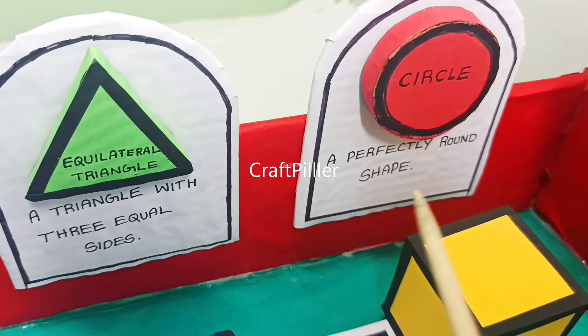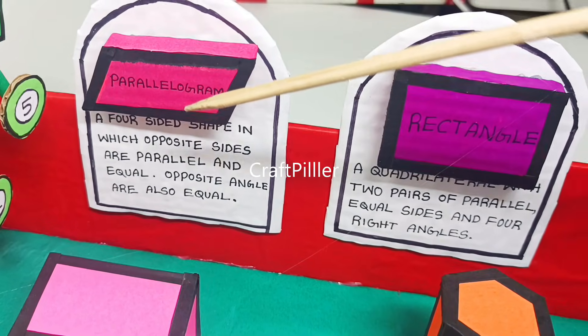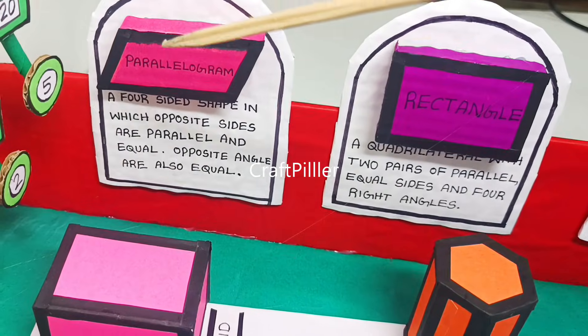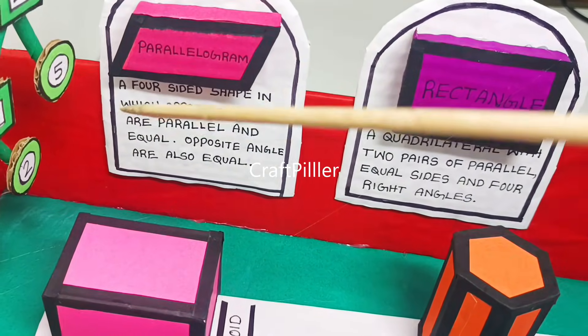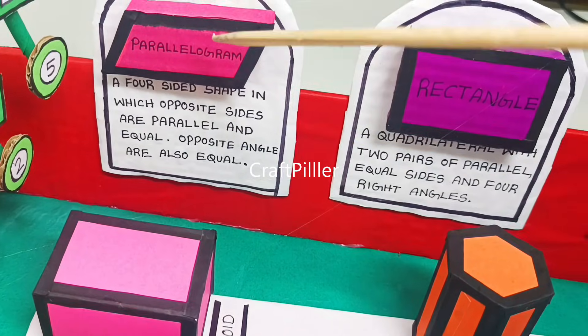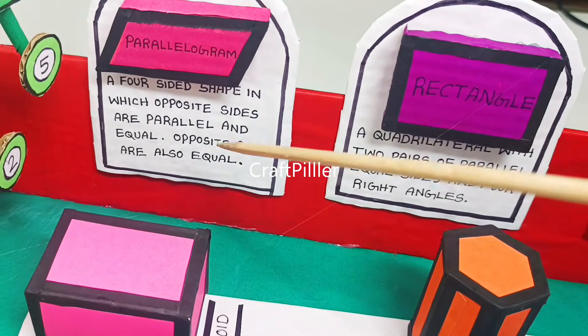On the other side of the compound wall, we have kept another 2D shape which is parallelogram. This is a four-sided shape where opposite sides are parallel and equal, and opposite angles are also equal in the parallelogram.